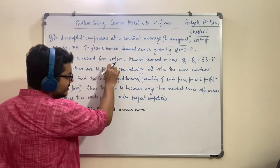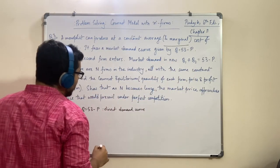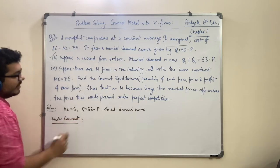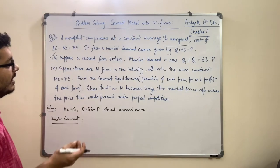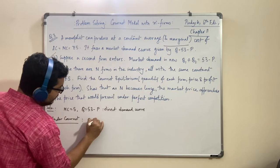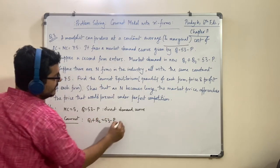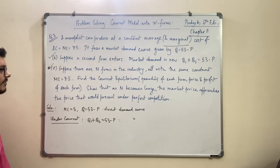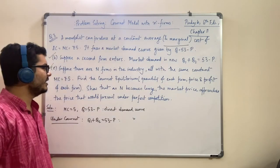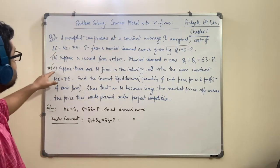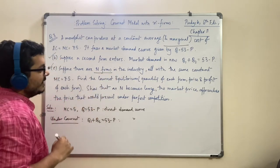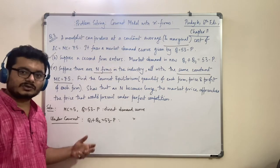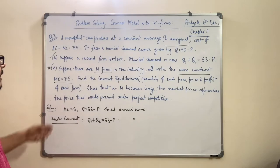We are interested in section E, which deals with n firms. Generally in textbooks you will not find a solved problem like this. Suppose there are n firms, with the same constant MC = 5. So the structure that we used in the earlier segment is the same structure here, just with specific numbers. Solving the problem will make you understand better. We are interested in the Cournot equilibrium: the quantity of each firm, the market price, and the profit of each firm. And then the result that as n becomes large, market price approaches the perfectly competitive price.